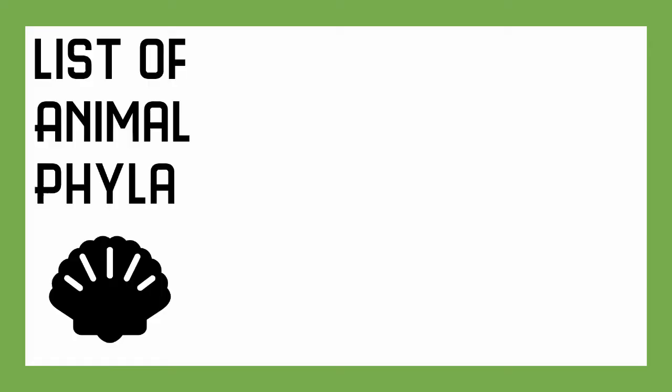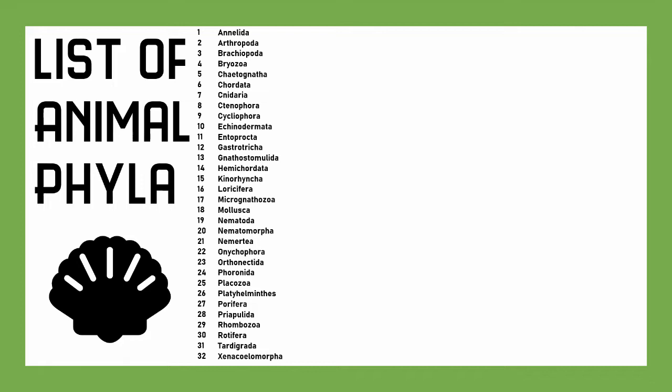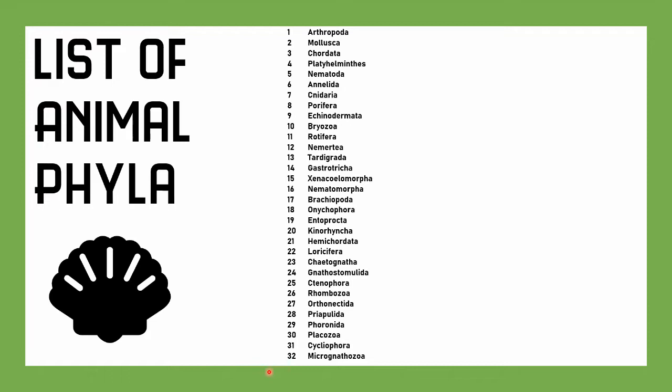Let's take a look at our list of animal phyla. Here are the 32 animal phyla in alphabetical order. Since I'll be going through this by size, starting from the most species to the least, we'll switch it over. We have Arthropoda at number one, all the way down to 32, Micrognathozoa. Different resources have different numbers and compositions of phyla, because it's a tricky business to figure these things out, but this is close enough.